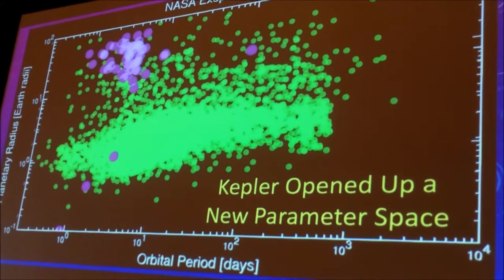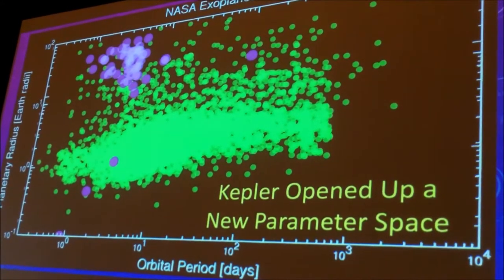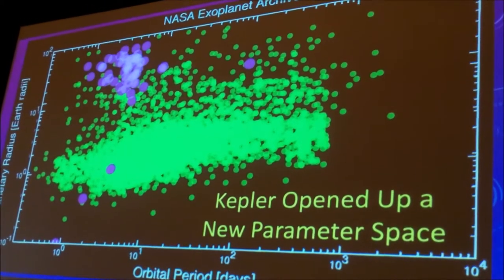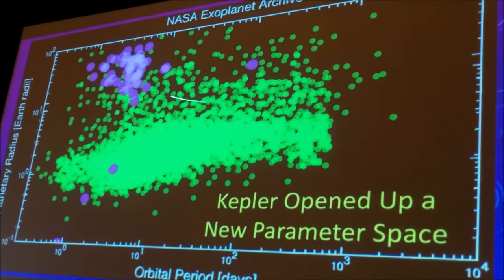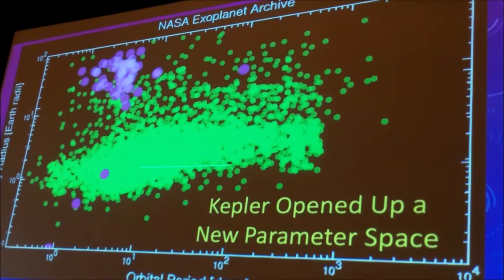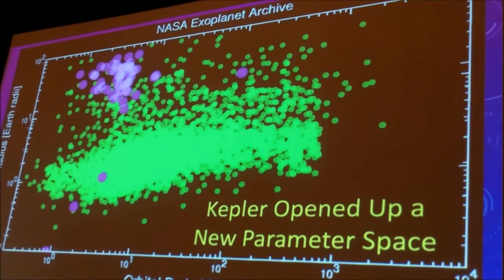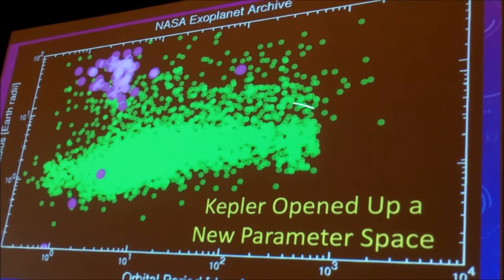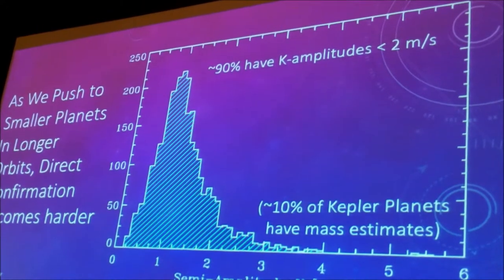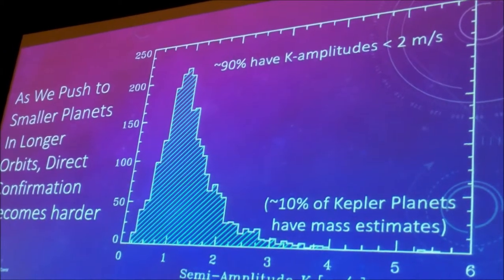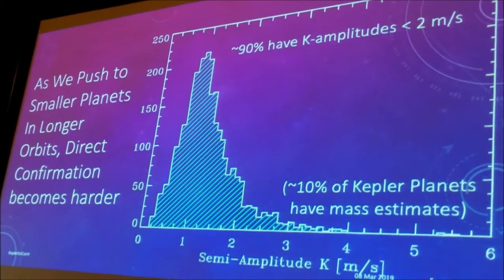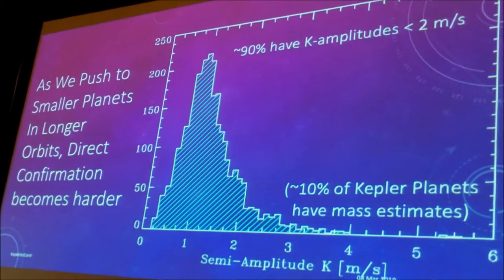And then Kepler happened. This is all of the candidates, now shifted into planetary radius versus orbital period. These are the same pre-launch transiting planets and their radii — you can see they're all very large planets. But the majority of the things that Kepler was finding were significantly smaller. So we needed to handle these in a very different way, because the predicted radial velocity signatures for the majority of these planets were well below a few meters per second. In fact, if you look today at the confirmed Kepler planets, only 10% of them actually have mass estimates, and not all of those were done with radial velocities — a good fraction were done with transit timing information.